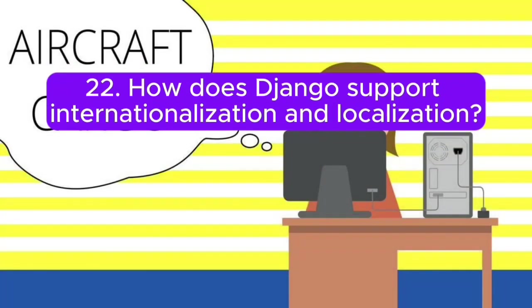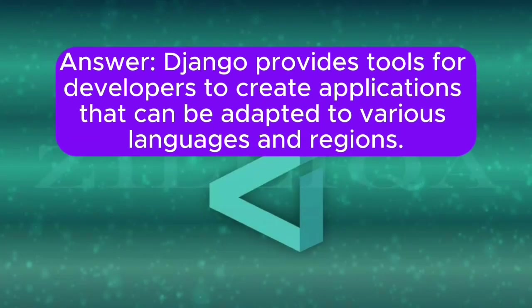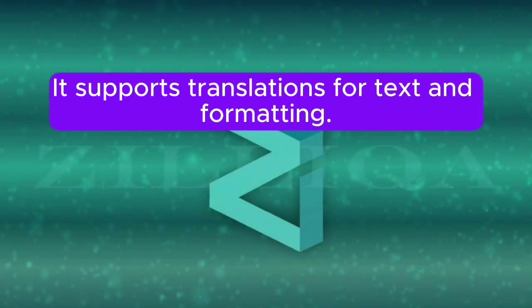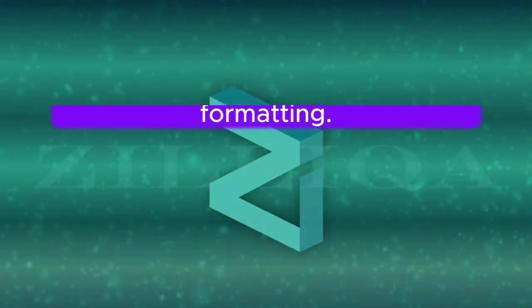Question 22: How does Django support internationalization and localization? Answer: Django provides tools for developers to create applications that can be adapted to various languages and regions. It supports translations for text and formatting.